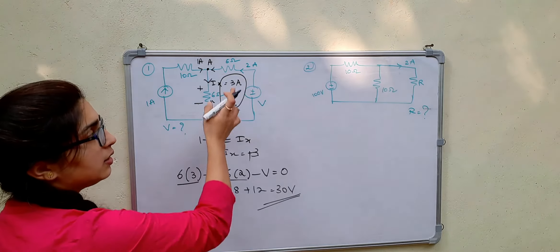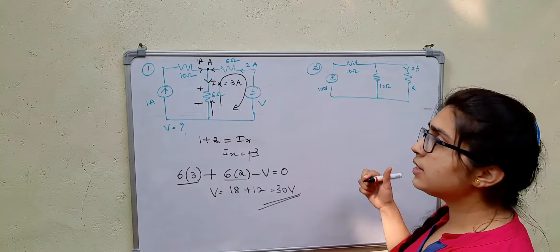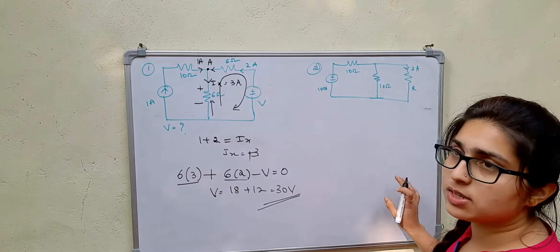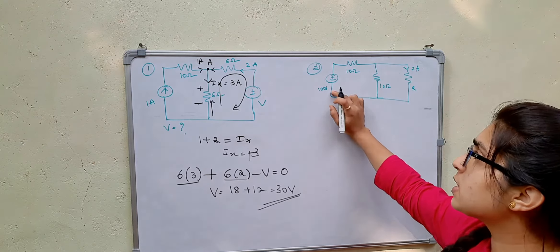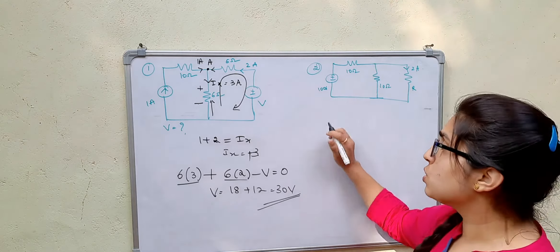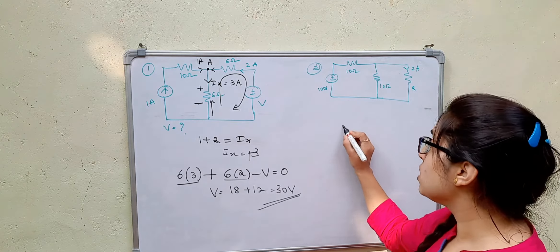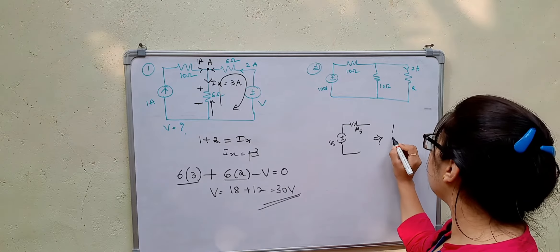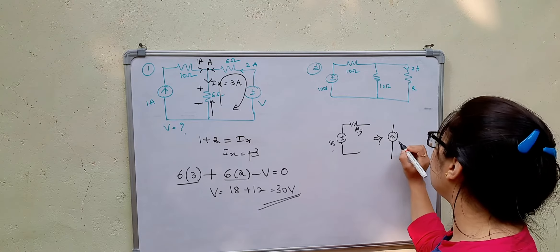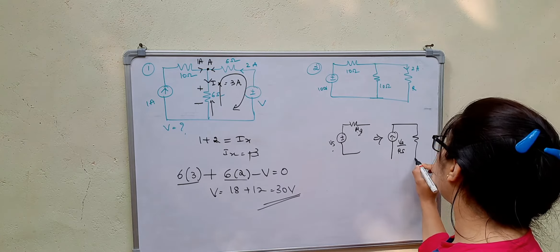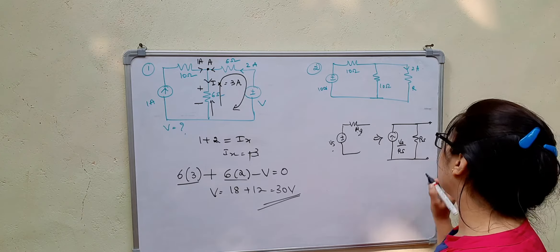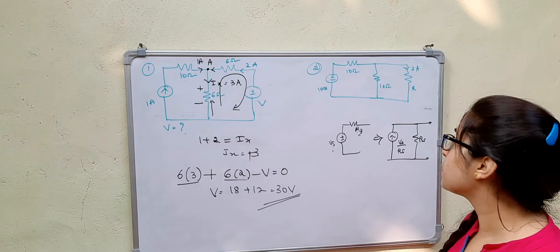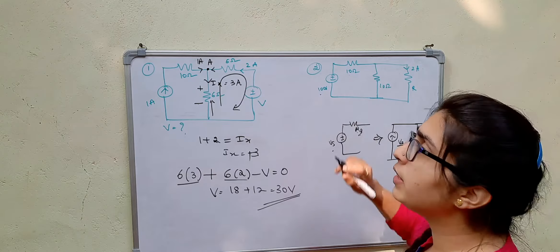First applying KCL, then applying KVL. Now let us solve for R. These two resistors are in parallel, so the voltage across them is also in parallel. First, let us convert the voltage source to a current source. If you have Vs with internal resistance Rs, then Is equals Vs divided by Rs, and the internal resistance will be in parallel. So 100 divided by 10 equals 10 amperes.